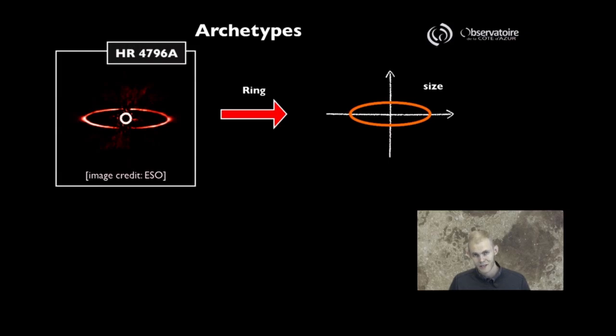The ring is characterized by a couple of numbers. The first one is the size of that ring. We expect the ring itself to be circular, and the only reason we perceive it as elliptical is simply because we are not looking at it face-on. It's a projection effect.